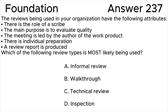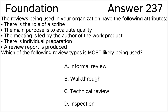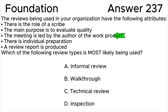Let's look at the attributes and analyze them according to the ISTQB syllabus. There is a role of a scribe — this attribute is specified for walkthroughs, technical reviews, and inspections, so the review cannot be an informal review. The purpose is to evaluate quality — this is one of the most important objectives of a walkthrough. The review meeting is led by the author — this attribute is not allowed for inspections and is typically not done in technical reviews.